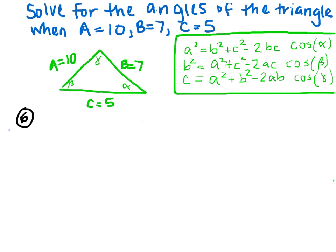So when we're given all the sides of a triangle and we need to find the angles, we're going to use the law of cosines. I've outlined it in the green box. All we need to do is plug in our values for A, B, and C to find each of the angles.